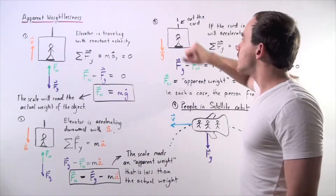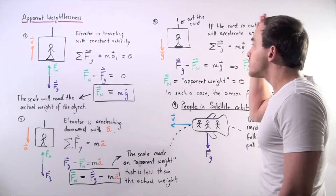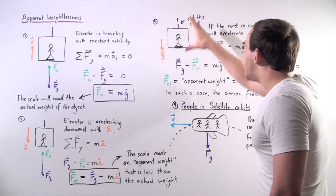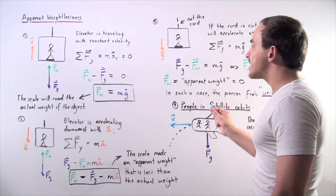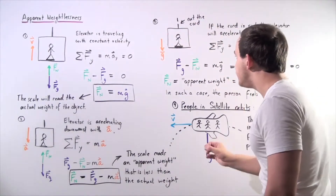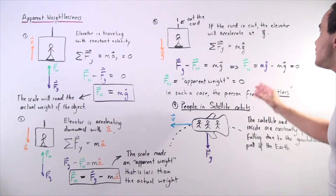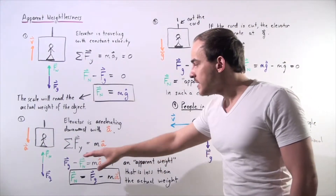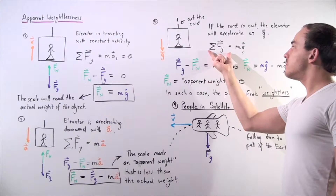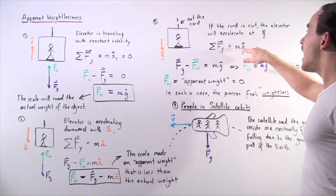Finally, let's look at case three. Suppose the cord breaks, and the elevator, the person, and the scale begin traveling downward with the same acceleration as g. Our object is now in free fall. If the cord is cut, the elevator accelerates at g — 9.8 meters per second squared. Summing all the forces acting on the person gives m times g.